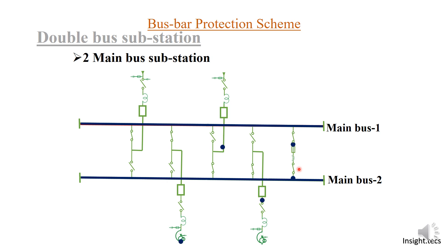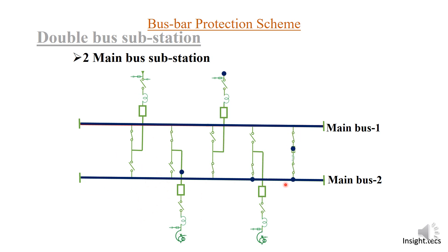Now let us consider another scenario — bus maintenance. If you want to perform maintenance of one bus, it is very easy to free that bus because all elements will be connected to bus number two. If the bus coupler is off and the isolator is open, main bus one will be completely isolated.